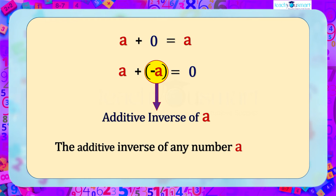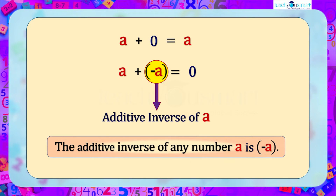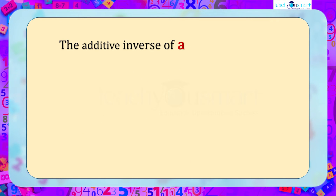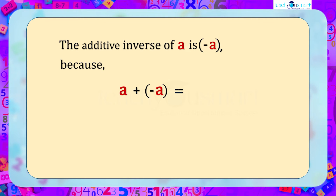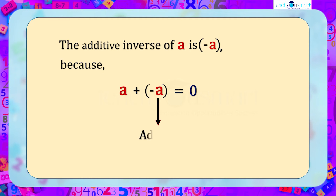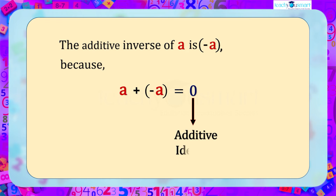In general, the additive inverse of any number a is represented by minus a. So the additive inverse of a is minus a, because a plus minus a equals zero. Here a is a number, minus a is its additive inverse, and zero is the additive identity.